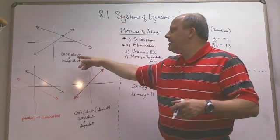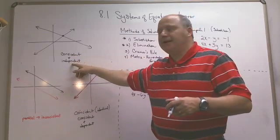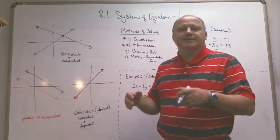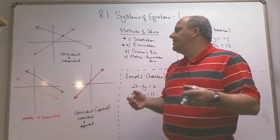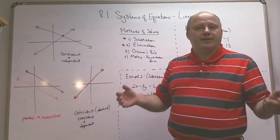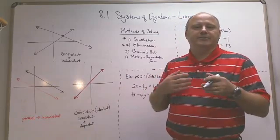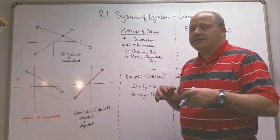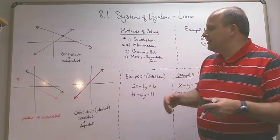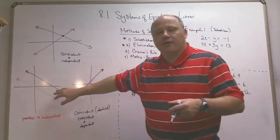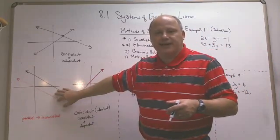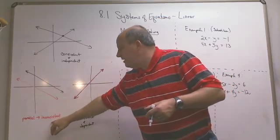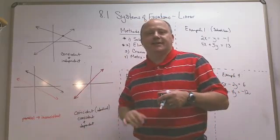When two lines cross at one point, they're said to be consistent and independent — consistent because it has a solution, and independent because there are two separate equations independent of each other. When they're parallel and don't cross, they don't have a common solution, and they're said to be inconsistent.